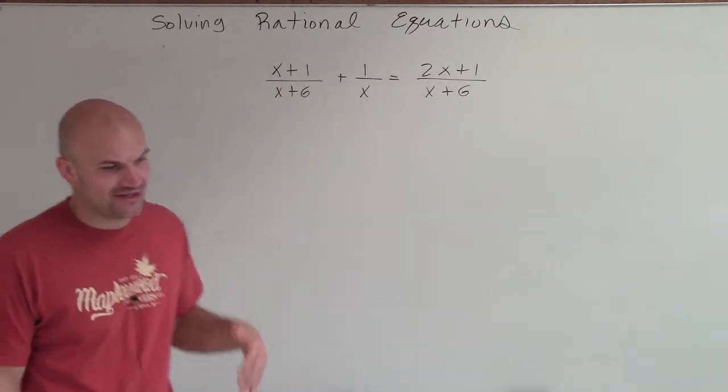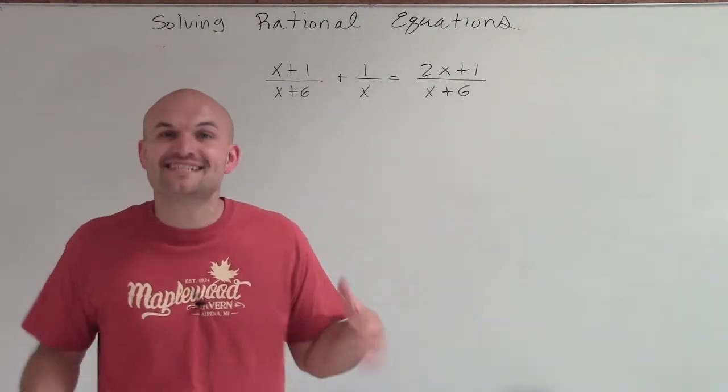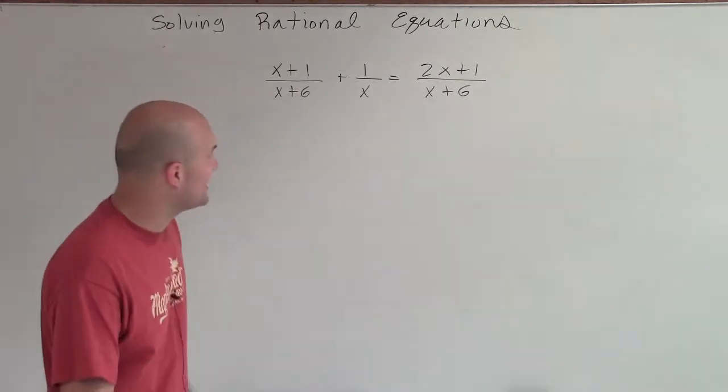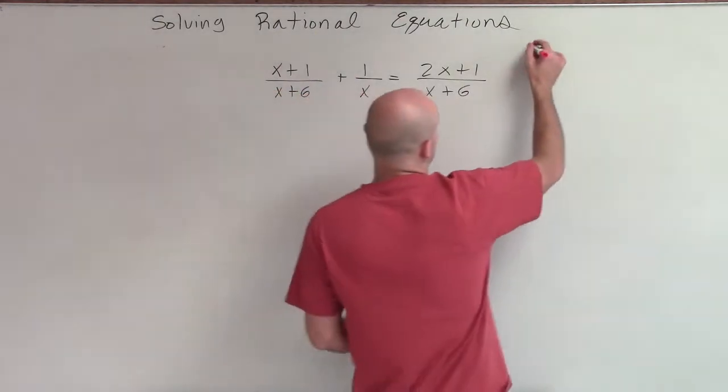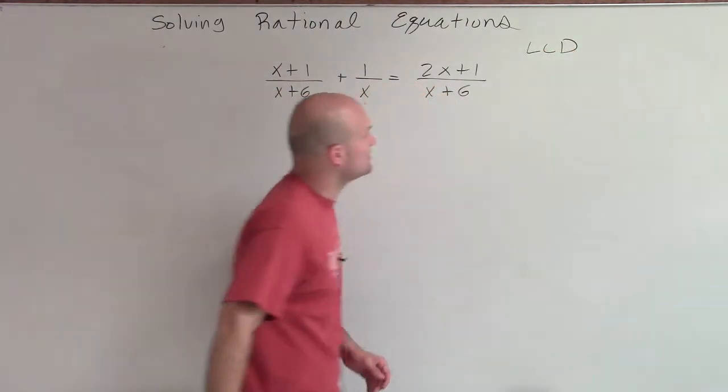So to solve a rational expression or a rational equation like this, let's get rid of the fractions. To get rid of the fractions, we need to determine the LCD. The LCD is the least common denominator.